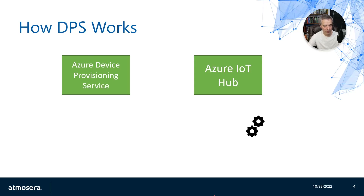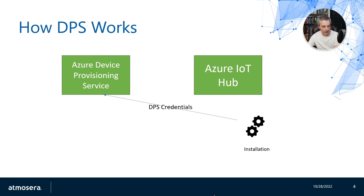The onboarding process could be done by a technician, the end user, or someone else. At some point, the device is going to connect to the Device Provisioning Service with the credentials that were installed on the device. It's not going to actually submit the key or certificate — it's going to use that to sign something. The signing process involves getting some metadata from the device and using the key or certificate to sign that. When that goes across the wire and the Device Provisioning Service sees that request, it checks the signature, and if the signed signature matches based on the metadata, it knows the device is authenticated and says it can use this device with an IoT hub.